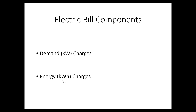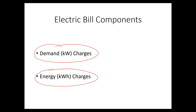The next two items you'll find on most electric bills are demand charges and energy charges. Energy is pretty obvious — it is the amount of energy, the total number of kilowatt-hours you use over a month's period of time. Demand is more like a flow rate; it's more like how much energy you're using per second.